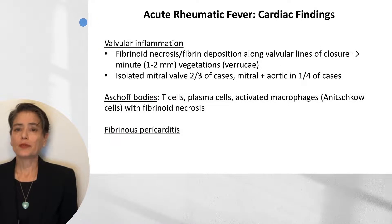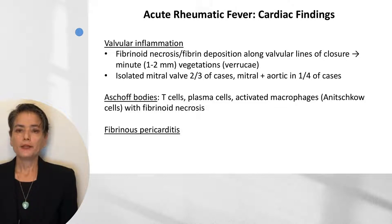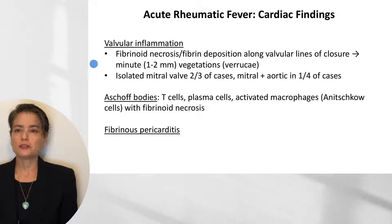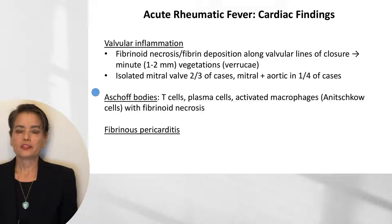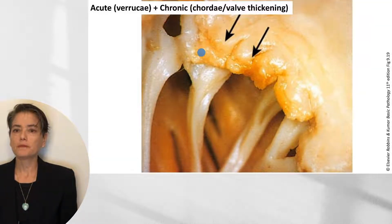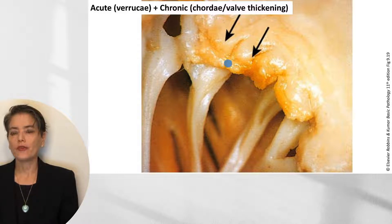Let's begin with a brief discussion of acute rheumatic fever, which is covered in a separate video on valvular pathology. In acute rheumatic fever, we can get valvular inflammation with fibrinoid necrosis and fibrin deposition along the valvular lines of closure, leading to those tiny 1 to 2 millimeter vegetations called verruci. These can involve the mitral valve and/or aortic valve.